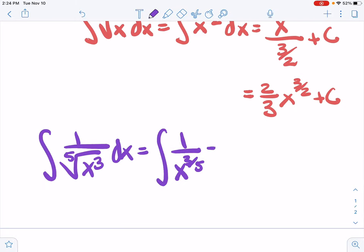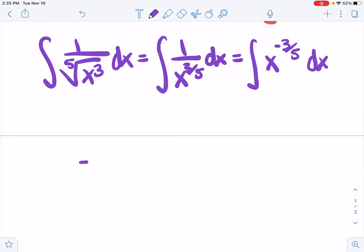x to the 3 fifths dx equals the antiderivative of x to the minus 3 fifths dx. And now we can use the power rule. Now we're set up.